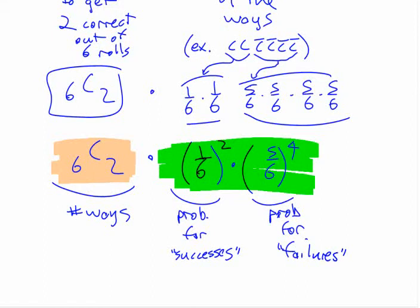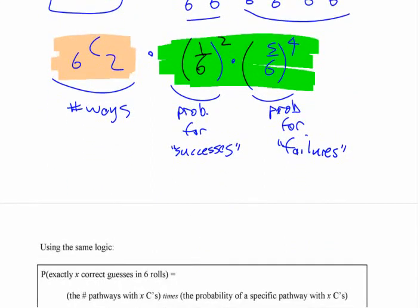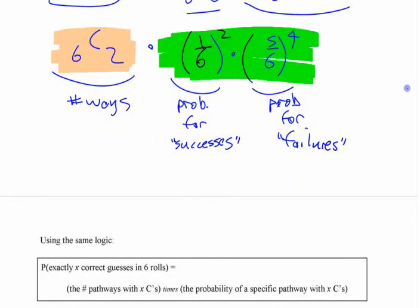That's the binomial theorem — using it to calculate probabilities. We're going to generalize it in a few minutes, but make sure you understand it in that specific context and can use the shortcut for the calculations.